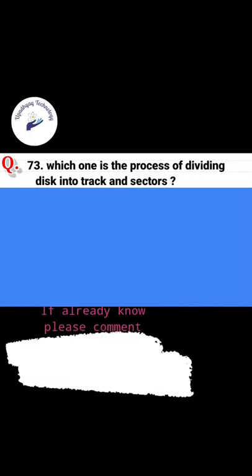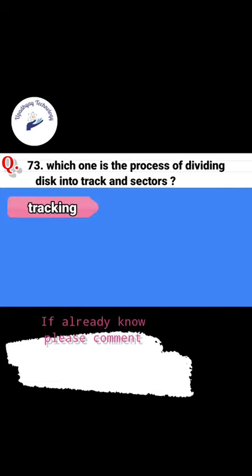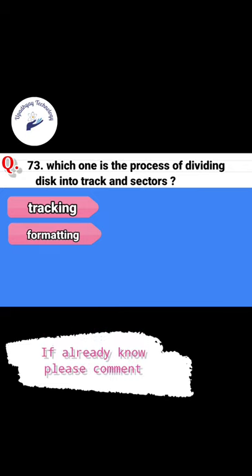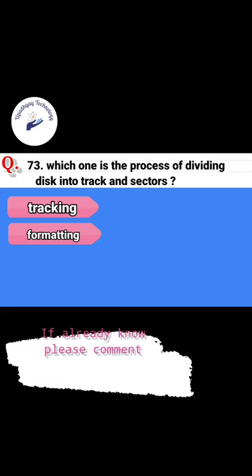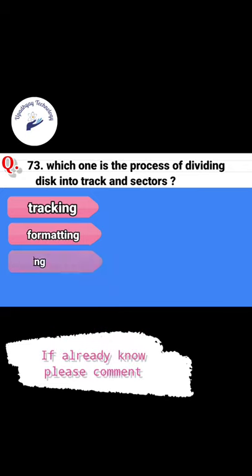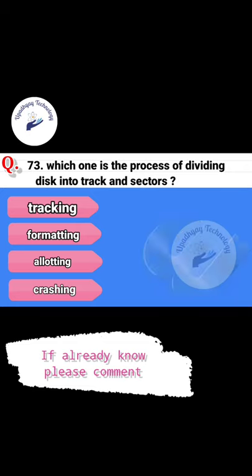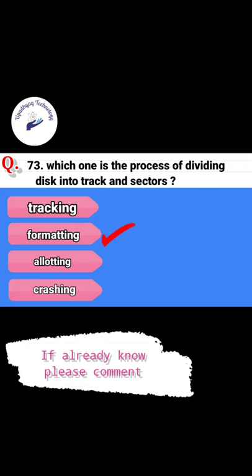Question 73. Which one is the process of dividing a disk into tracks and sectors? The options are: Tracking, Formatting, Allotting, and Crashing. The correct answer is Formatting.